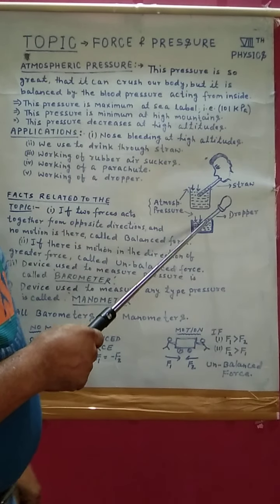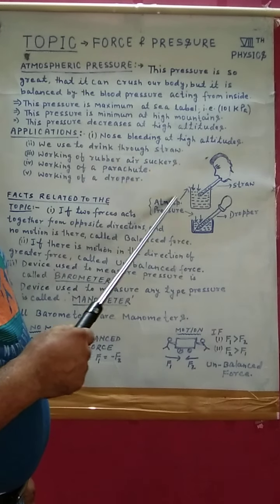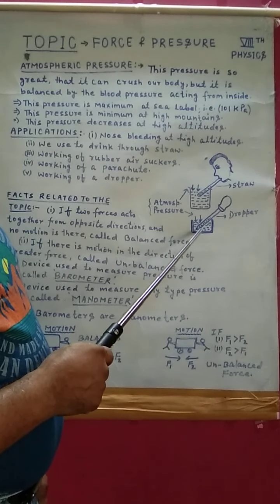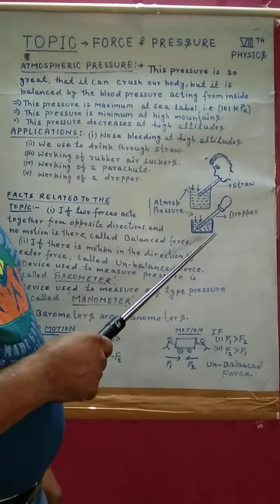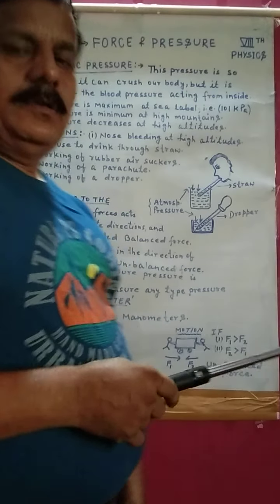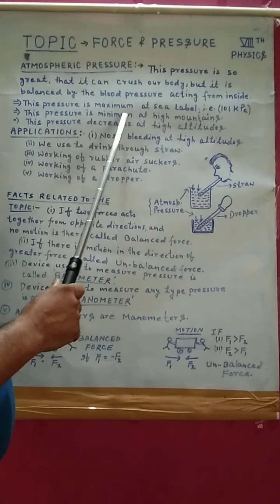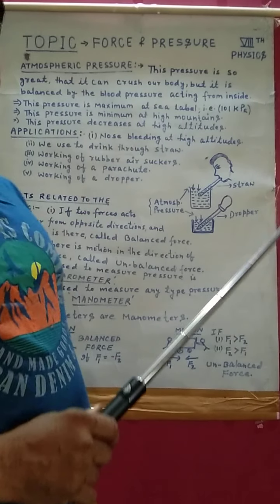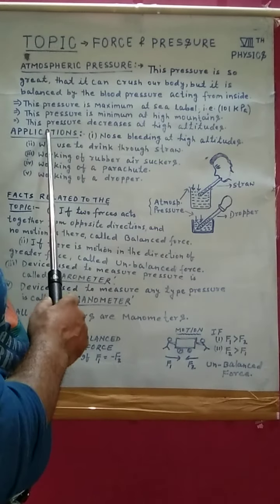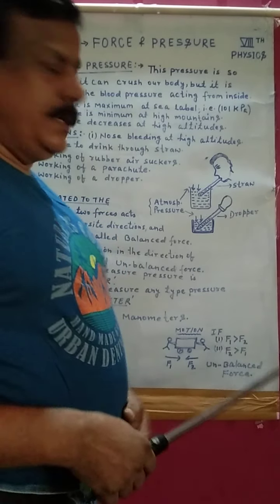You can see with the help of arrows that atmospheric pressure is applied in both cases — liquid rises in the dropper and rises in the straw. Go through the figures. I have written five examples related to applications of atmospheric pressure. You should try to find out more examples as well.